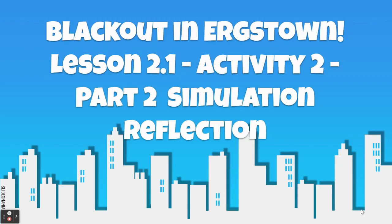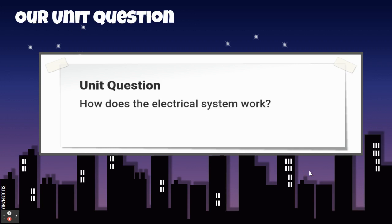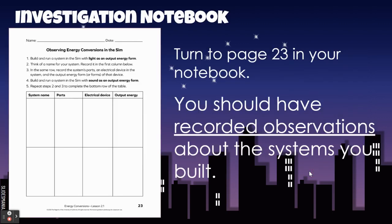Welcome back, fourth grade scientists. Today we're going to finish up activity two of lesson 2.1. Let's review what our purpose for this unit is — we are trying to figure out how the electrical system works. In our last lesson, you had to complete this page in your investigation notebook. If you did not do that, stop the video now, go back to Tuesday's assignment, complete the simulation first, then come back and watch this video.